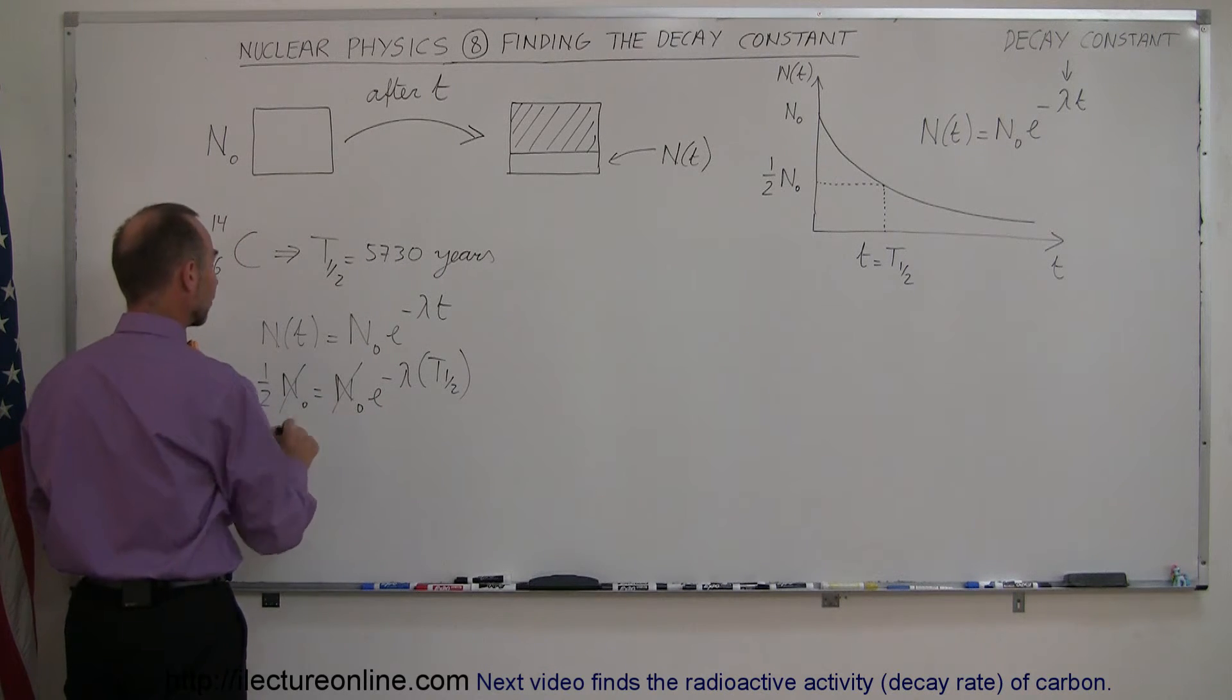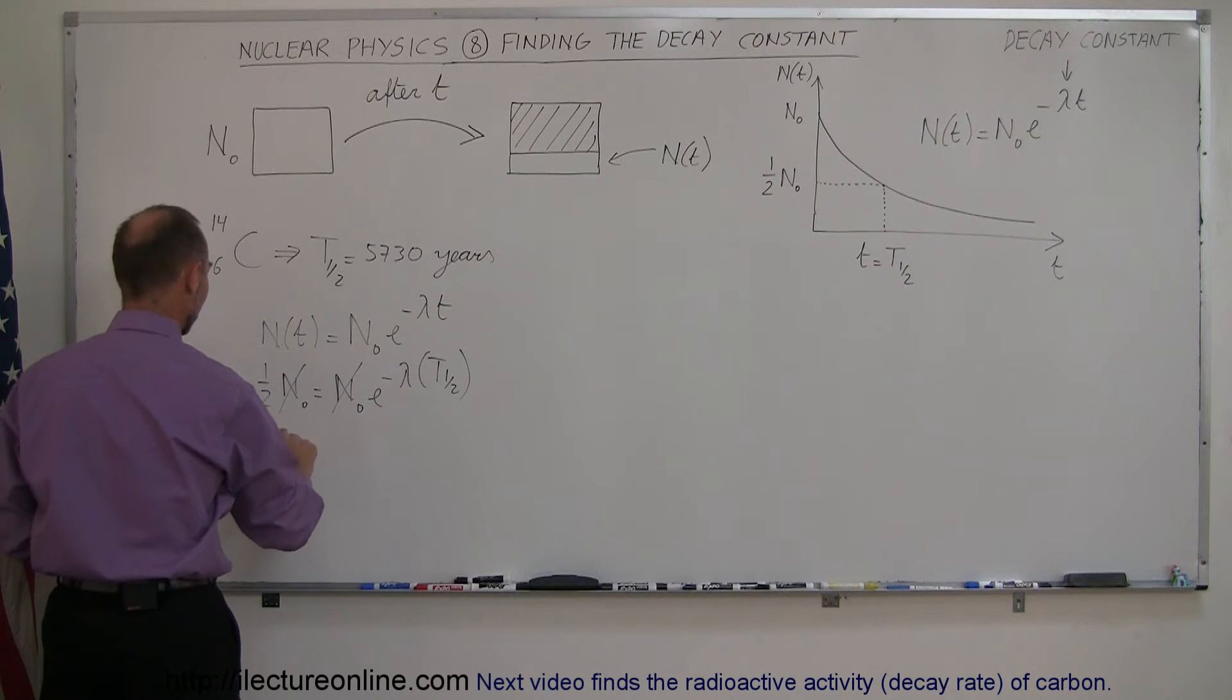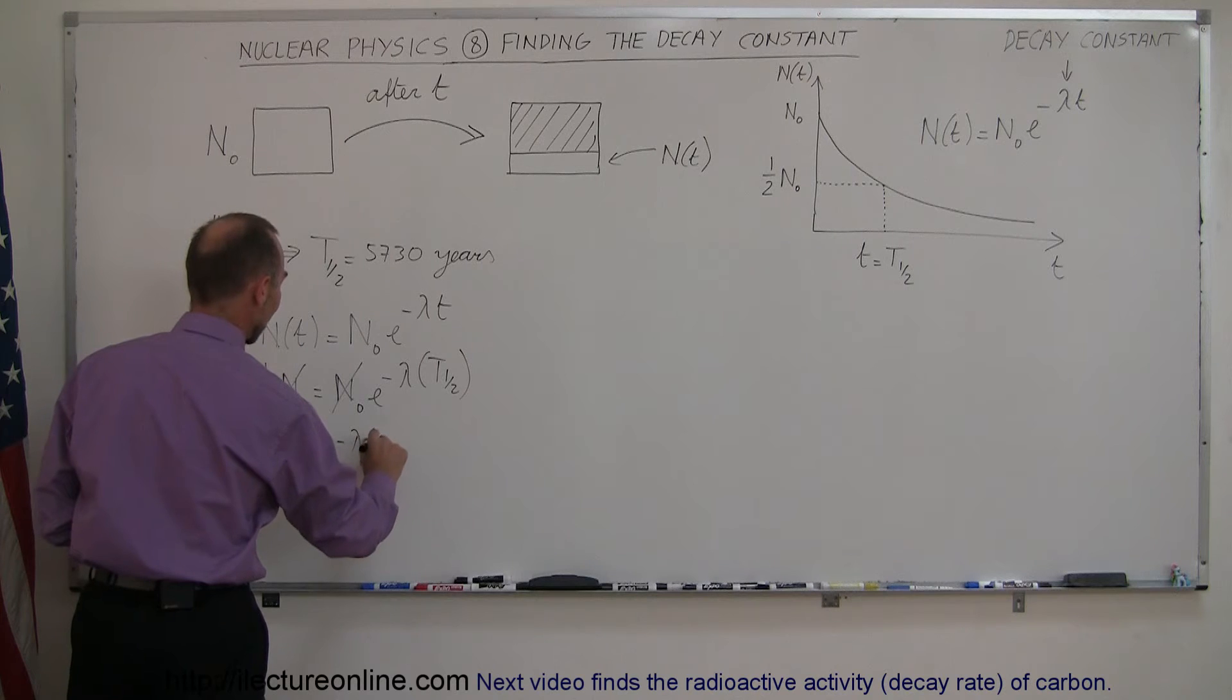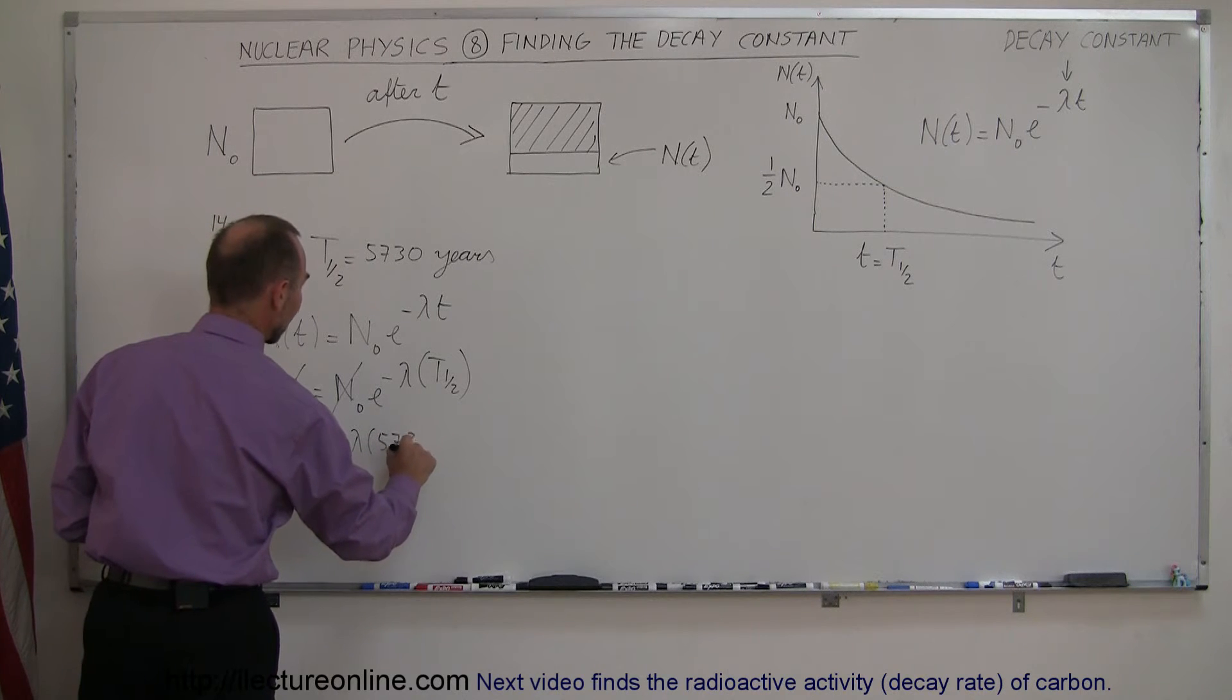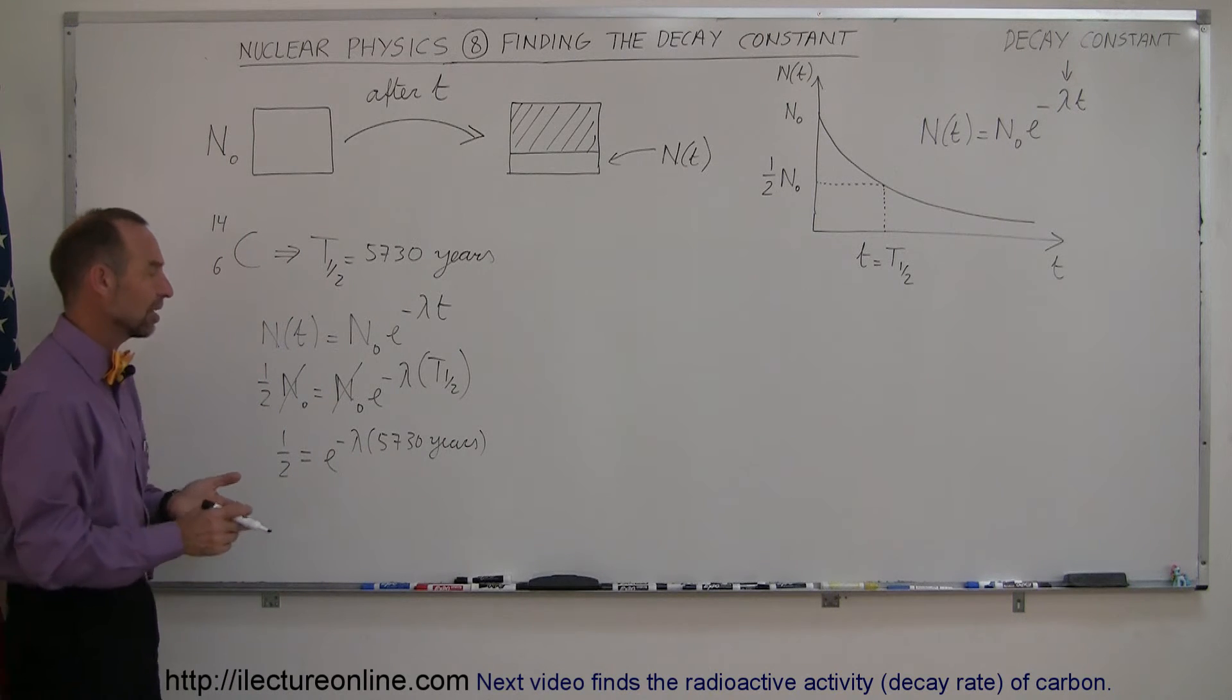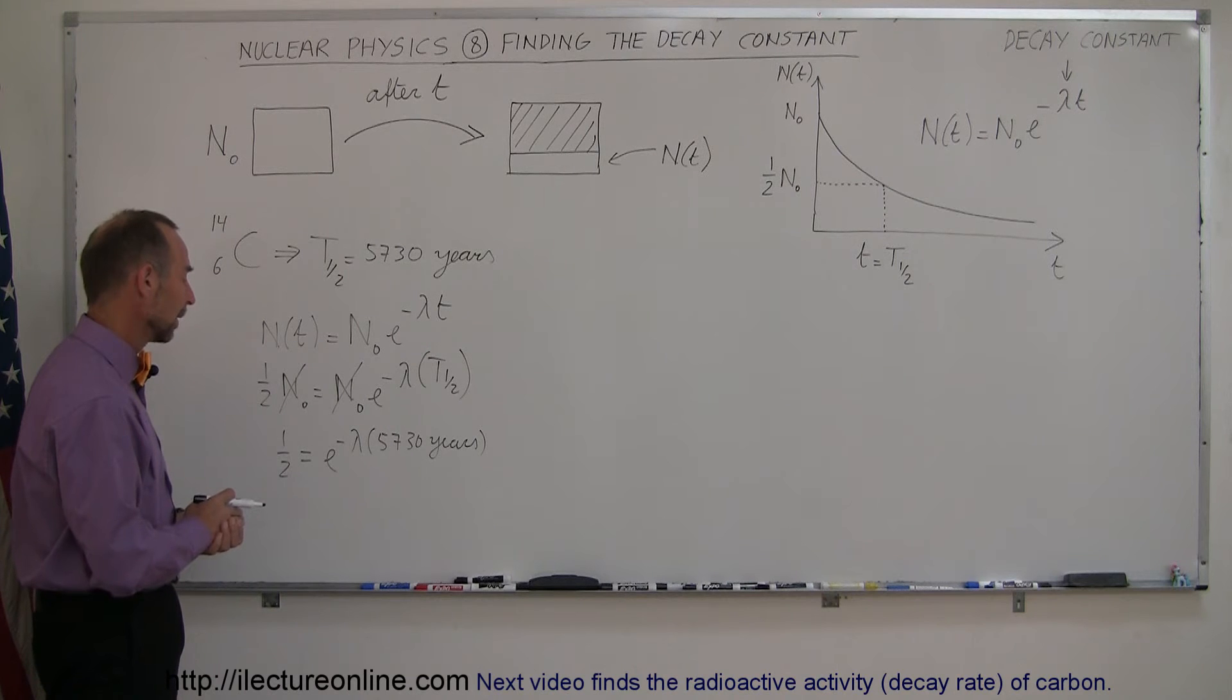So then you can see that n sub-naught cancels out. We replace this by what the half-life is, and so we can say that one-half is equal to e to the minus lambda times 5,730 years. Do put in the units for time, because sometimes half-life is expressed in years, in days, in seconds, and so obviously we want to have that in there.